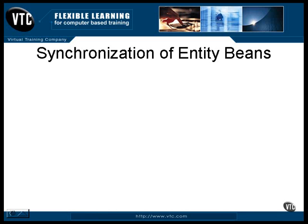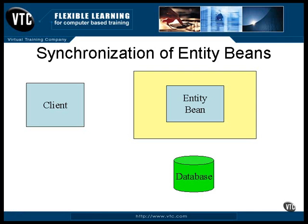Here's a rough idea of how the container bean takes care of this situation. A client program calls a method of the bean. This method is going to update some information in the database, but the message doesn't go directly to the bean — it gets only as far as the container of the bean. The container communicates with the database to lock any rows that may be affected by the action that is to be taken.